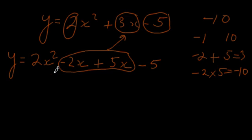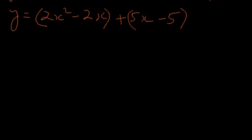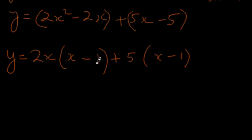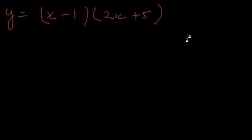What this allows us to do is factor out these two terms and these two terms separately. We've got a 2x in common in the first pair, so we pull out a 2x and we're left with x minus 1. In the second pair, we've got a 5 in common, and we're left with x minus 1. We then have x minus 1 in common in both terms, so we pull that out and we're left with 2x and 5. So we've factored the original quadratic into (x minus 1) times (2x plus 5).